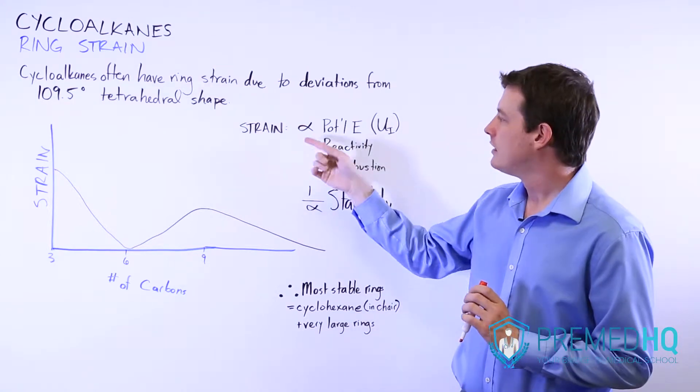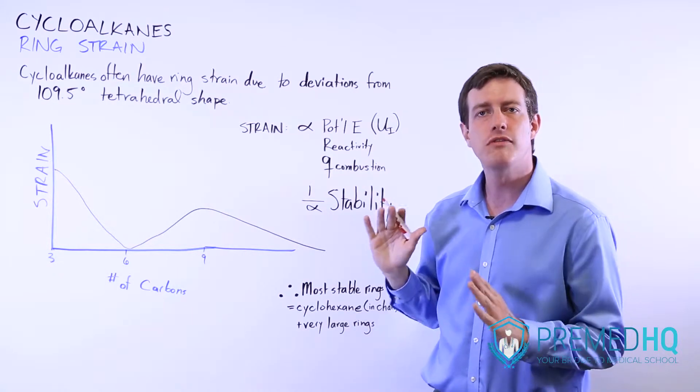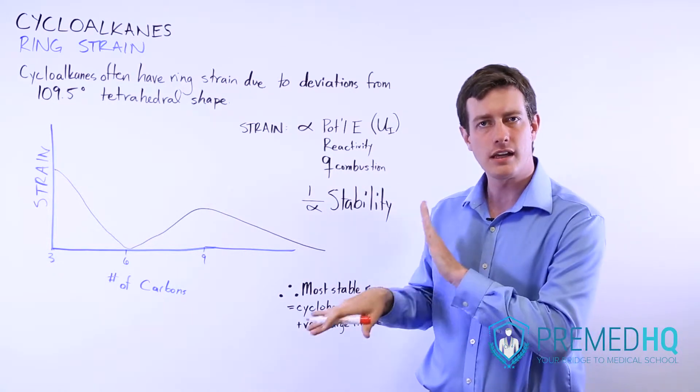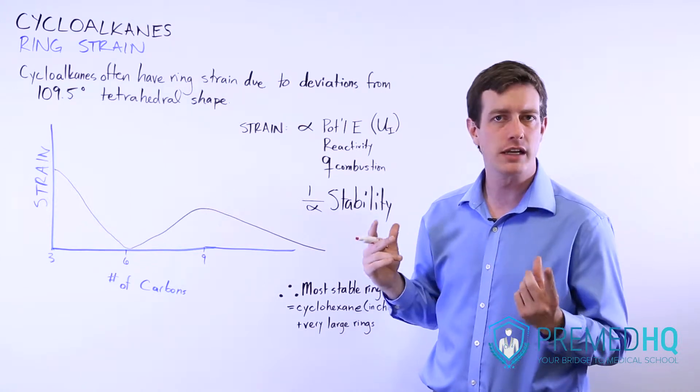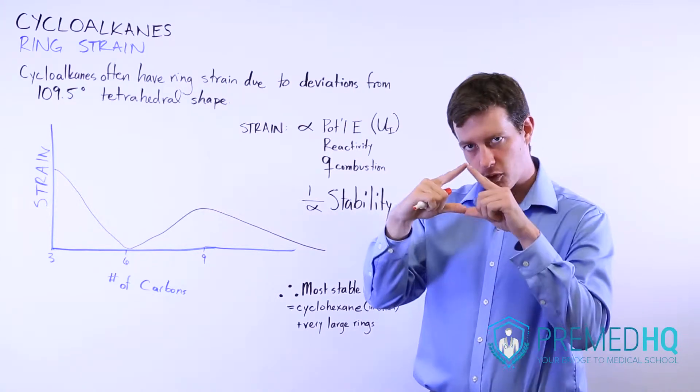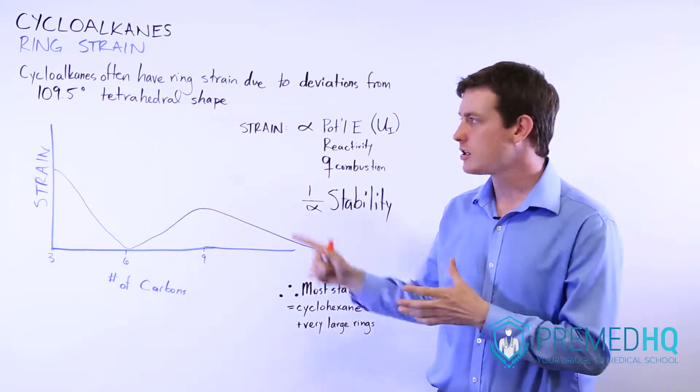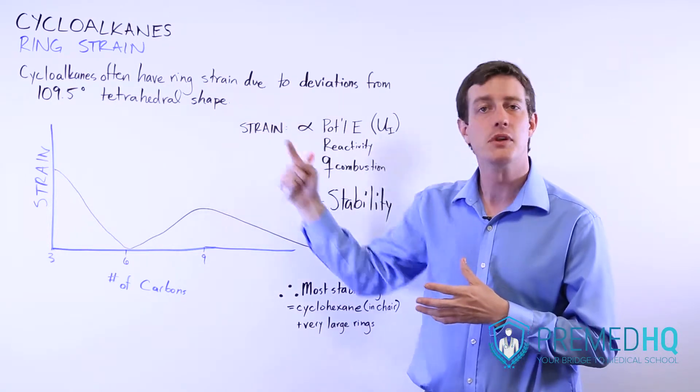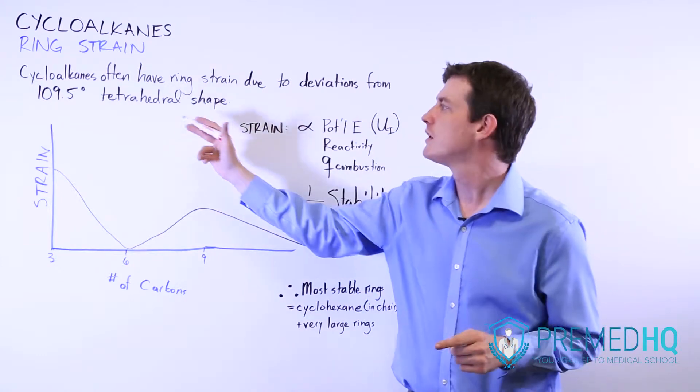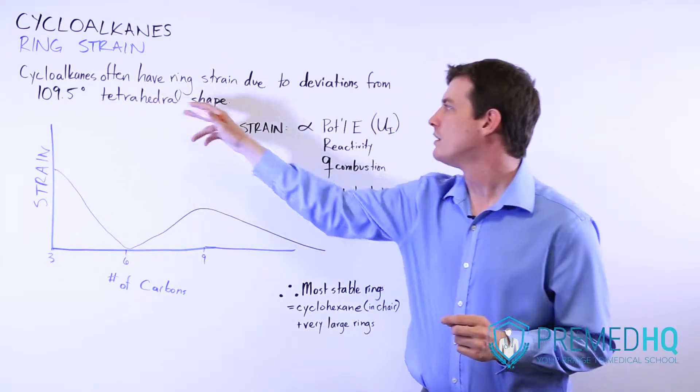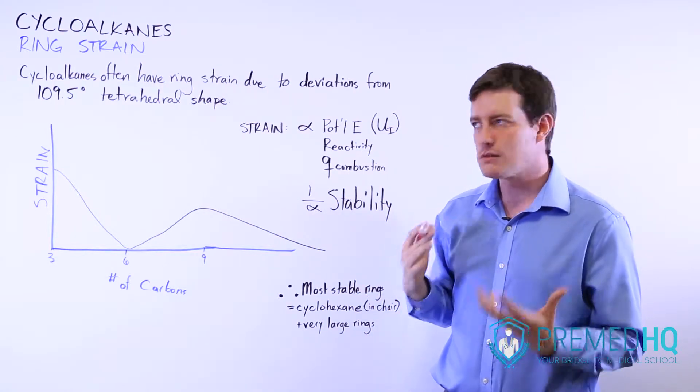Ring strain is inversely proportional to potential energy, and that's because when you force a bond to stop being in that tetrahedral shape, and perhaps with a three-membered ring like cyclopropane, which forces it into a triangle, you get a significant deviation from that angle. Remember that with a triangle you have 120 degree angles, so that's significantly different from the way that those bonds want to be oriented, and that creates potential strain.